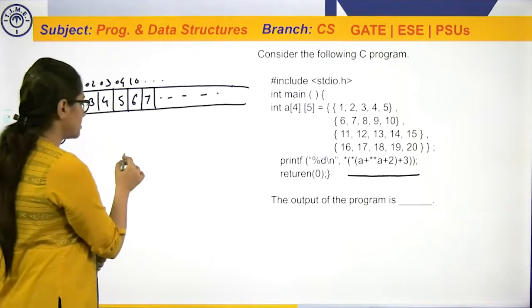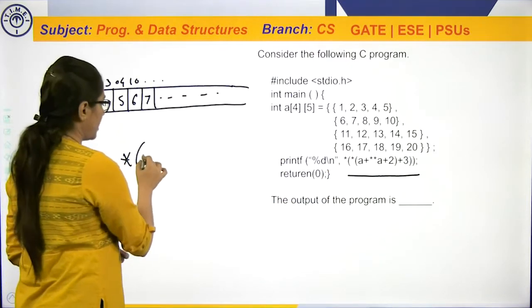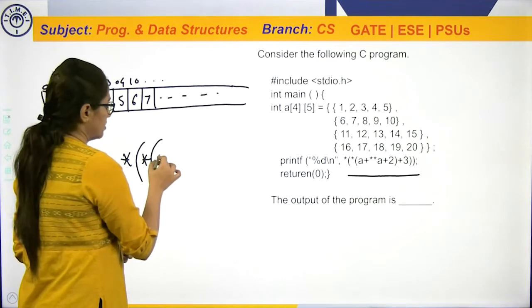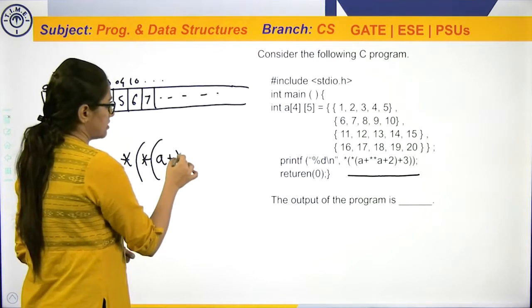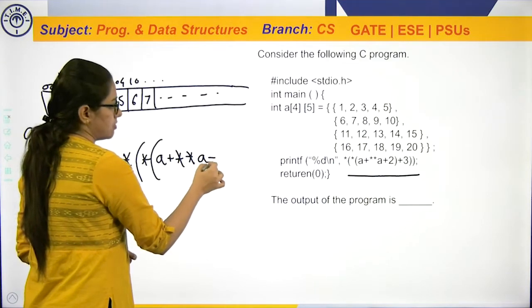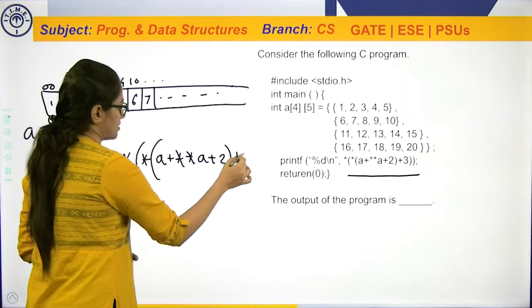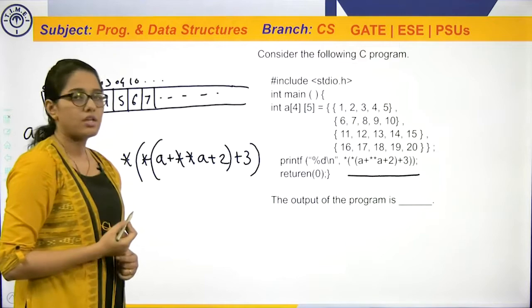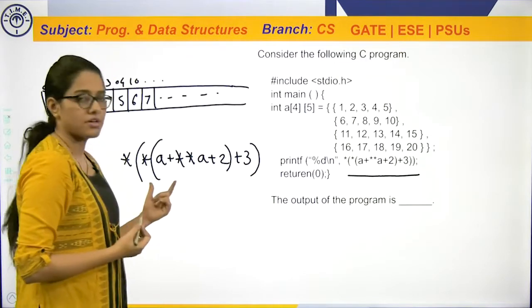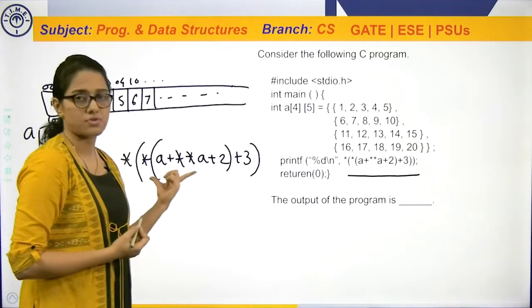The expression is star of, in bracket again, star of A plus star star A plus 2 plus 3. Okay? Now, as these brackets are there, first the inner bracket will get solved.